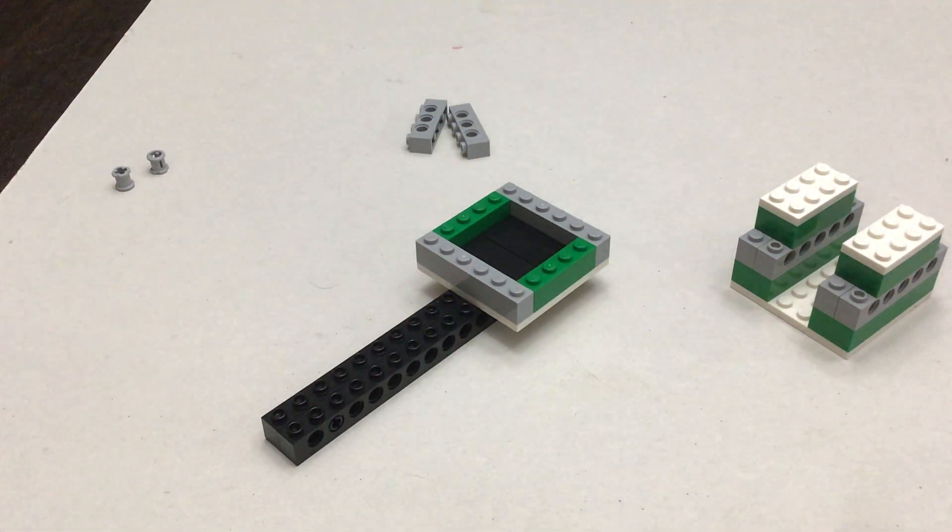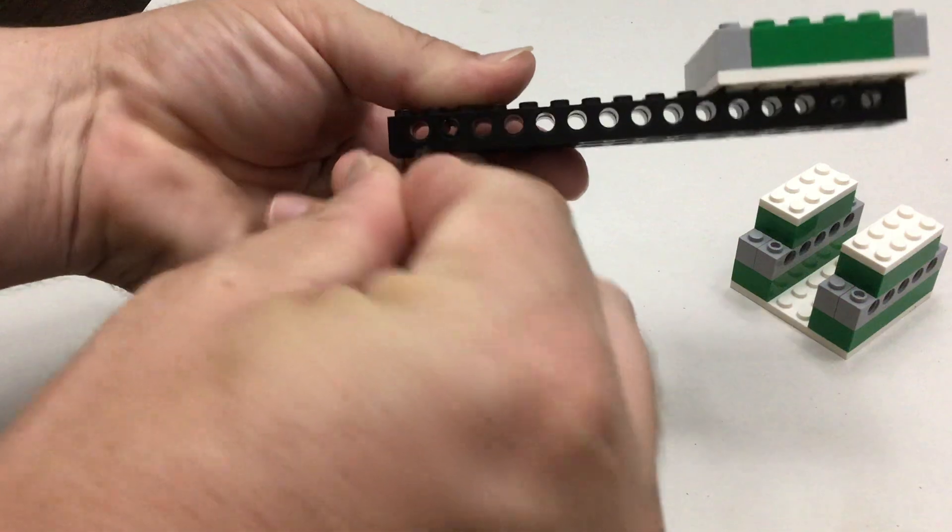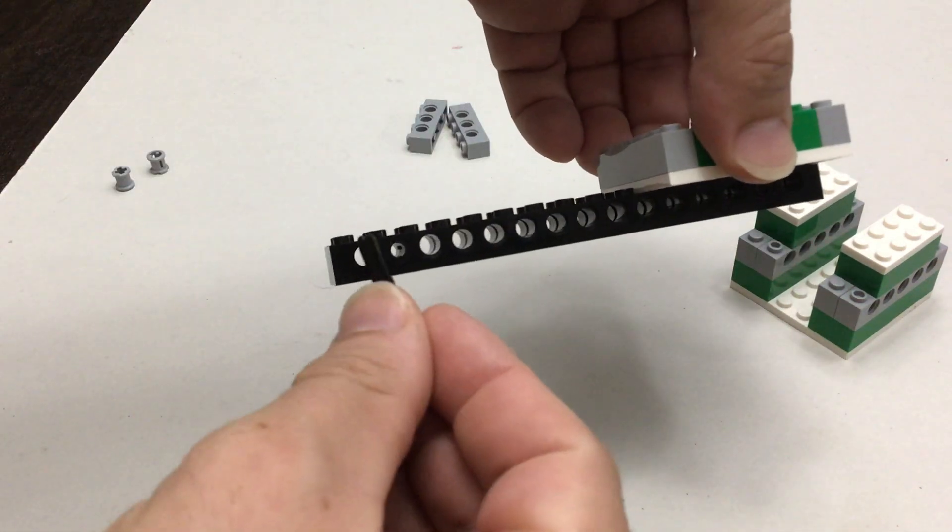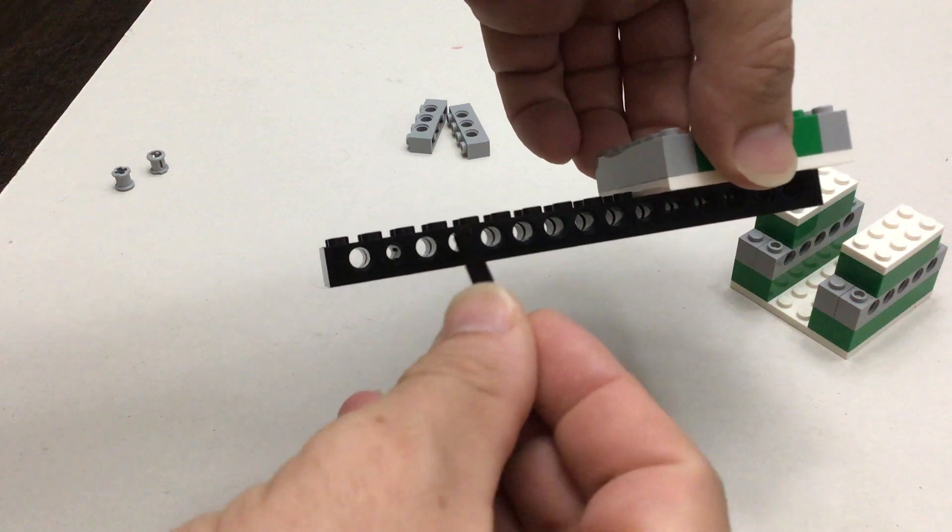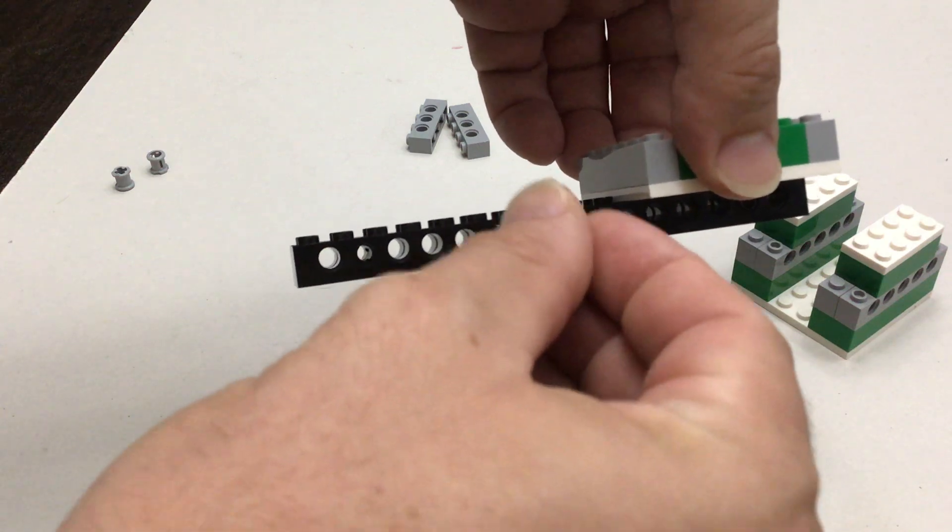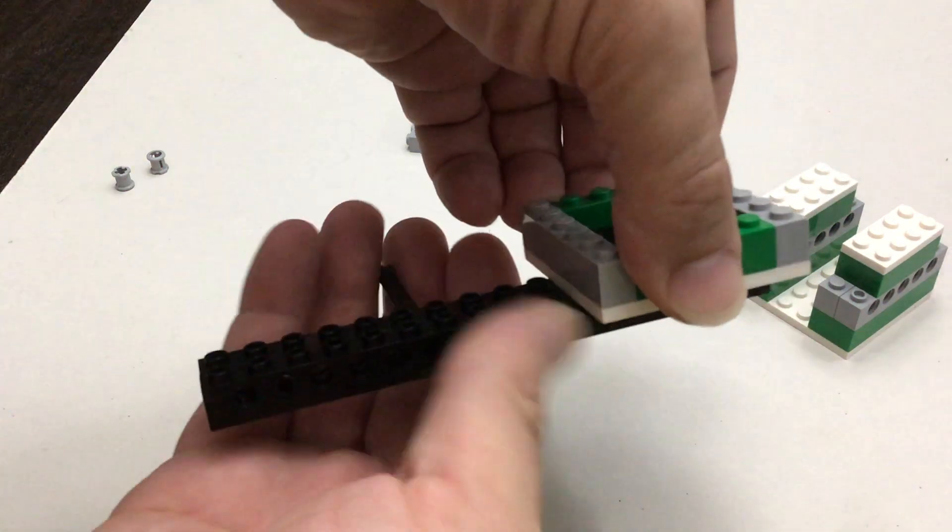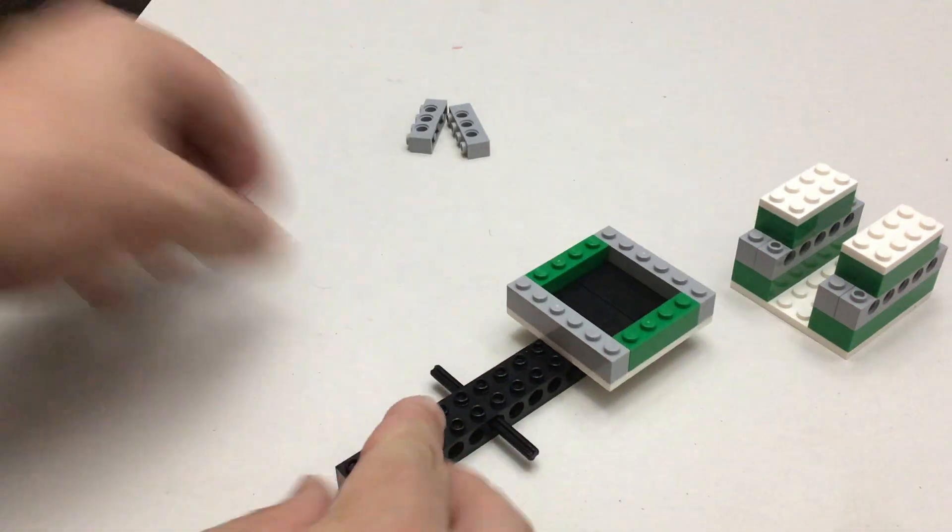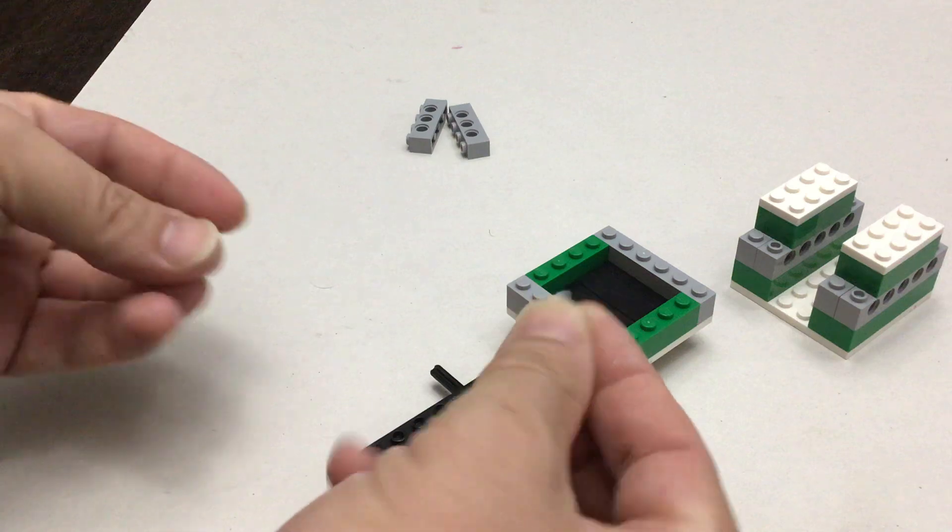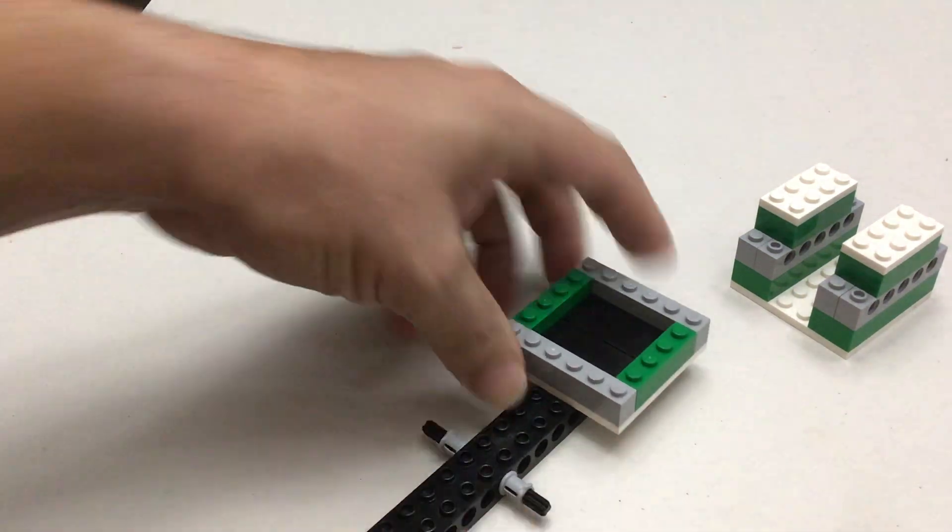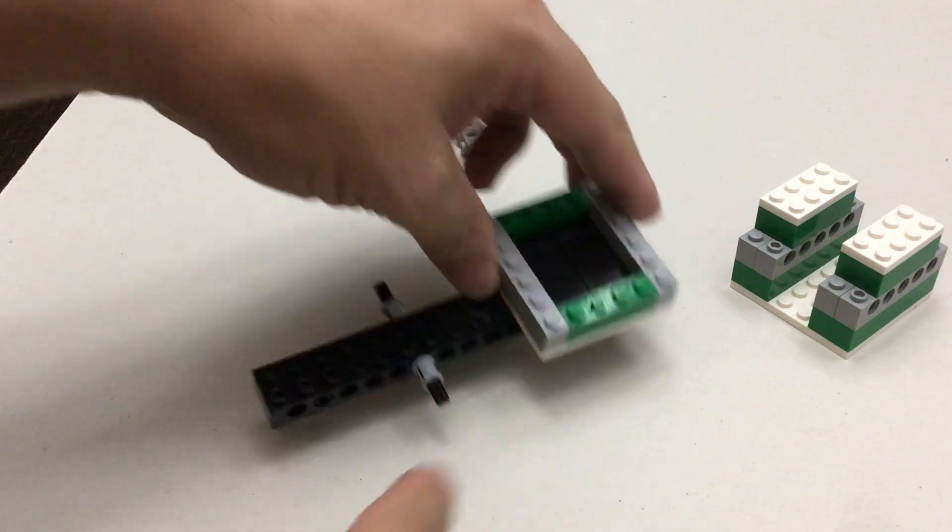The last step. We're going to count in - here let me do it so you guys can see. There we go. 1, 2, 3, 4, 5. And on the 6th hole is where it's going to go in. Then on either side we're going to add these bushes. Those just provide friction, and try to get it as even on both sides as you can.